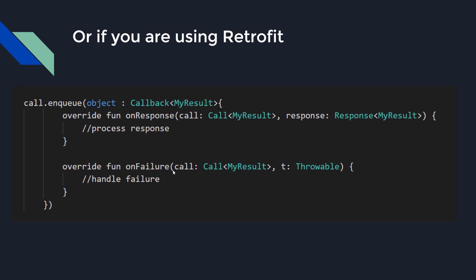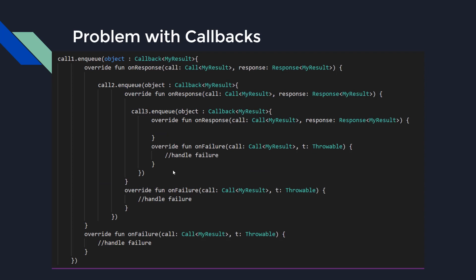The big problem happens when we have to make multiple requests. Assume you are using Retrofit and you want to perform three requests sequentially — what you will do is execute another request inside the callback of the previous request. As you can see here, we are executing call 2 inside the onResponse callback of call 1, and the same thing we are doing with call 3. As you can see, this is something we call callback hell. We have only 3 requests but still the code is too complicated and ugly.